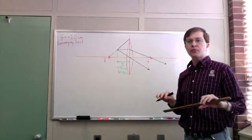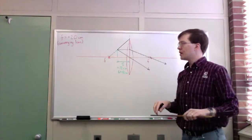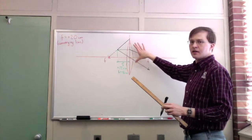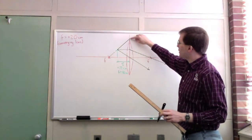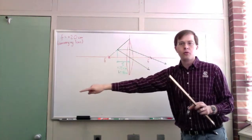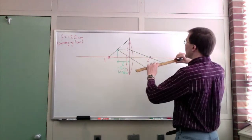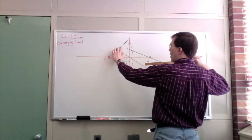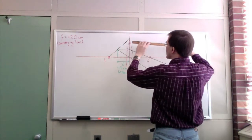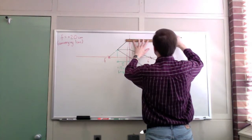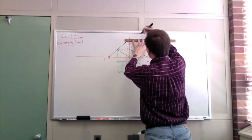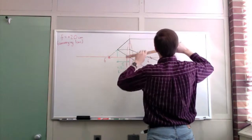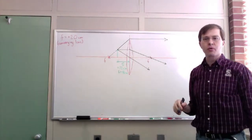Principal ray number three is like ray one run backward — it's a ray that winds up being parallel to the axis on the far side. If it had come from the other direction parallel to the axis and hit the lens, it would bend down and go through the focal point. So coming forward, it comes up as if from the focal point, passes through our object point, and then bends at the lens to go parallel to the axis. Let me line this up and bring that across.